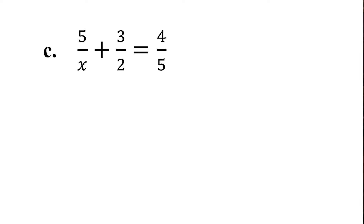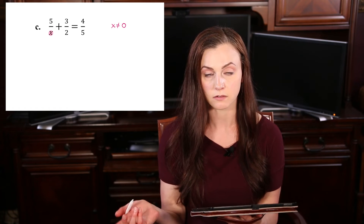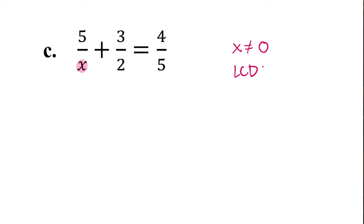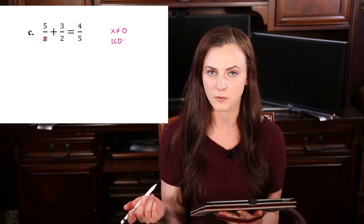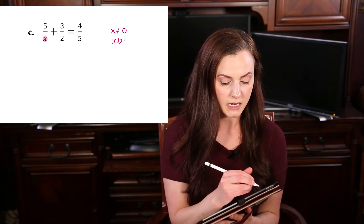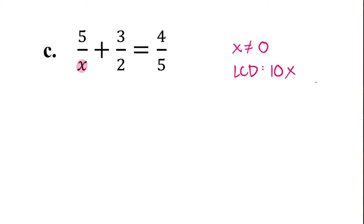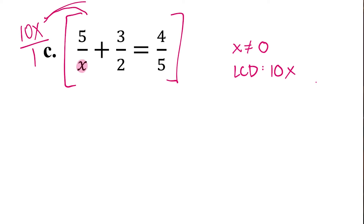On this one, we have 5 over x plus 3 over 2 equals 4 over 5. We only have one variable in the bottom, it's this x. So similarly to the first one, x cannot be 0. The least common denominator — we have x, 2, and 5. What's the smallest number that 2 and 5 will go into? 10. So 10 is part of the least common denominator, and then we also need the x, so it's 10x. So 10x times 5 over x — the x's would cancel, and you're left with 10 times 5, which is 50.